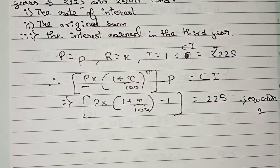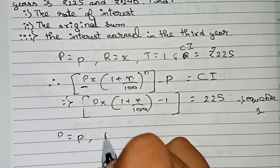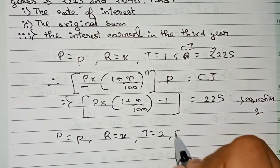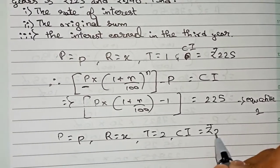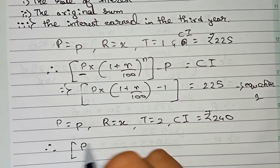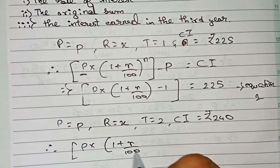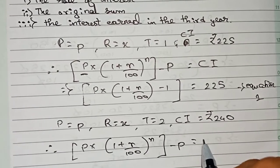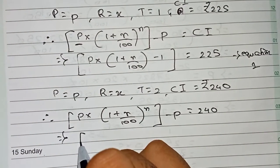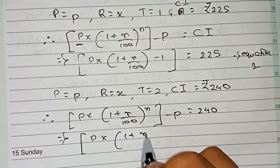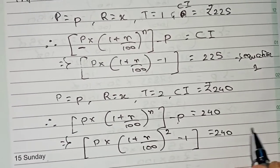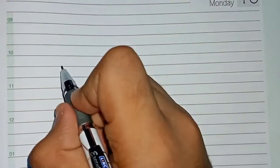For the second equation, P is the same, rate of interest is x, time is 2 years, and CI is ₹240. Applying the formula: P into (1 + r/100) to the power 2, minus P — taking P as common it becomes P into ((1 + r/100)² − 1) — equals ₹240.